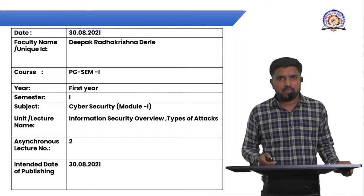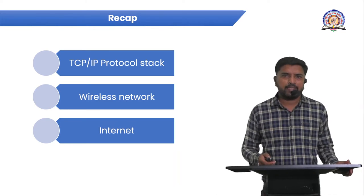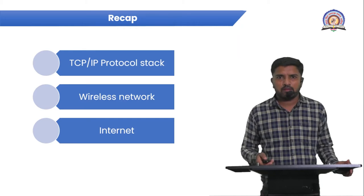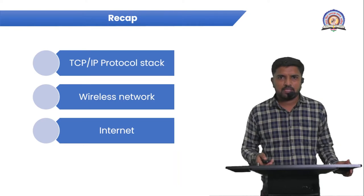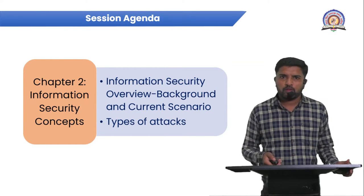In the last session, we started Cybersecurity Module 1. The topic for today's lecture is Information Security Overview, and we will learn about various types of attacks on security. Previously, I explained the TCP/IP protocol stack, its various layers and protocols such as physical, data link, network, transport, and application layer. We also discussed wireless networks, including access point mechanisms, and the last topic was the internet. For today's session, I will cover information security overview, background, current scenario, and most importantly, types of attacks.